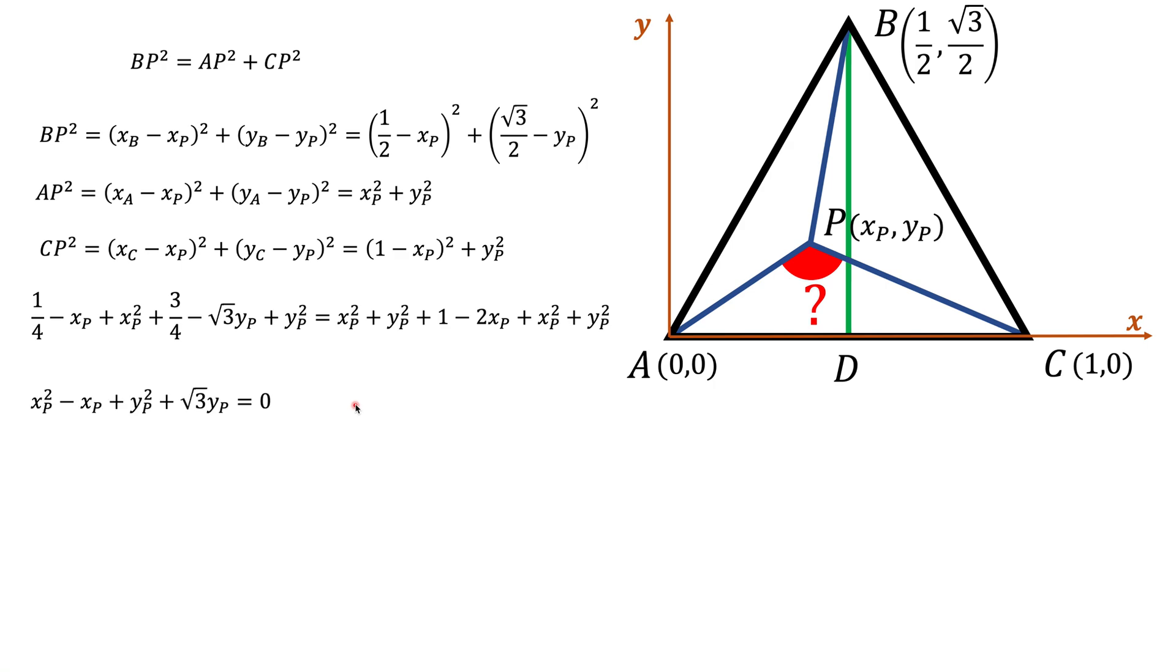Now if you combine all the like terms, we get a much simpler equation like this. And now the question is, what is this? To answer this question, first let's do what is called completing the square. To complete the square, we're going to use this formula. The first square is going to have terms with xP, and the second square is going to have terms with yP. So xP will be our a squared, minus xP will be 2ab. And what we need to figure out is what b squared should be here. You need to figure out that b squared should be one fourth.